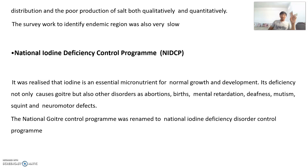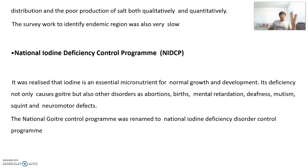It was realized that iodine is a very essential micronutrient for growth and development. Its deficiency not only causes goiter but also leads to other disorders such as abortions, stillbirths, mental retardation, deafness, mutism, squint, and neuromotor defects. So iodine deficiency affects far more than just the thyroid gland.